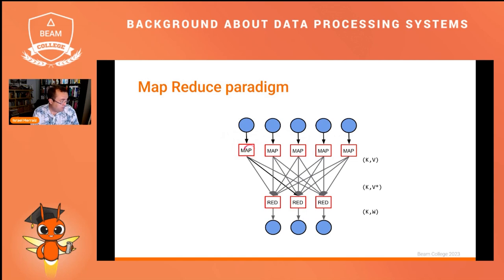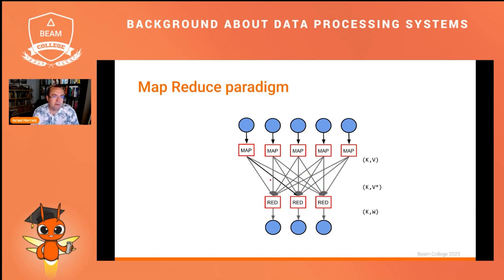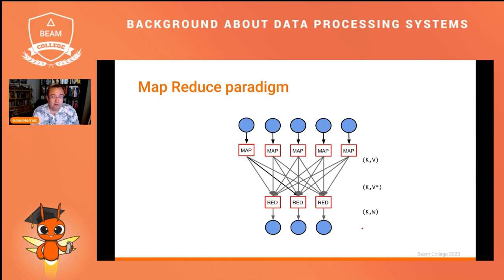The map function was executed for each one of the elements, and the output was another element transformed with a key. The system then shuffled the data to make sure that each one of the reducers got all the elements with the same key. Users didn't have to worry about the shuffling — this was done automatically by Hadoop. Then the reduction was done and the final calculation was ready. With this, there were lots of complex calculations that could be done very quickly in a cluster with affordable computers like regular PCs. This was really an innovation compared to the large-scale data processing technologies available before Hadoop and MapReduce.